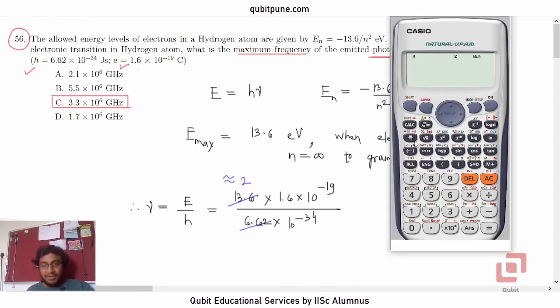Okay, calculator is here. 13.6 into 1.6 into 10 raised to negative 19, plus 34 from the denominator, 6.62. That is 3.287 into 10 raised to 15. Giga means 10 raised to 9. So 3.3 into 10 raised to 6 Gigahertz. 15 minus 9 is 6. So correct option is C.